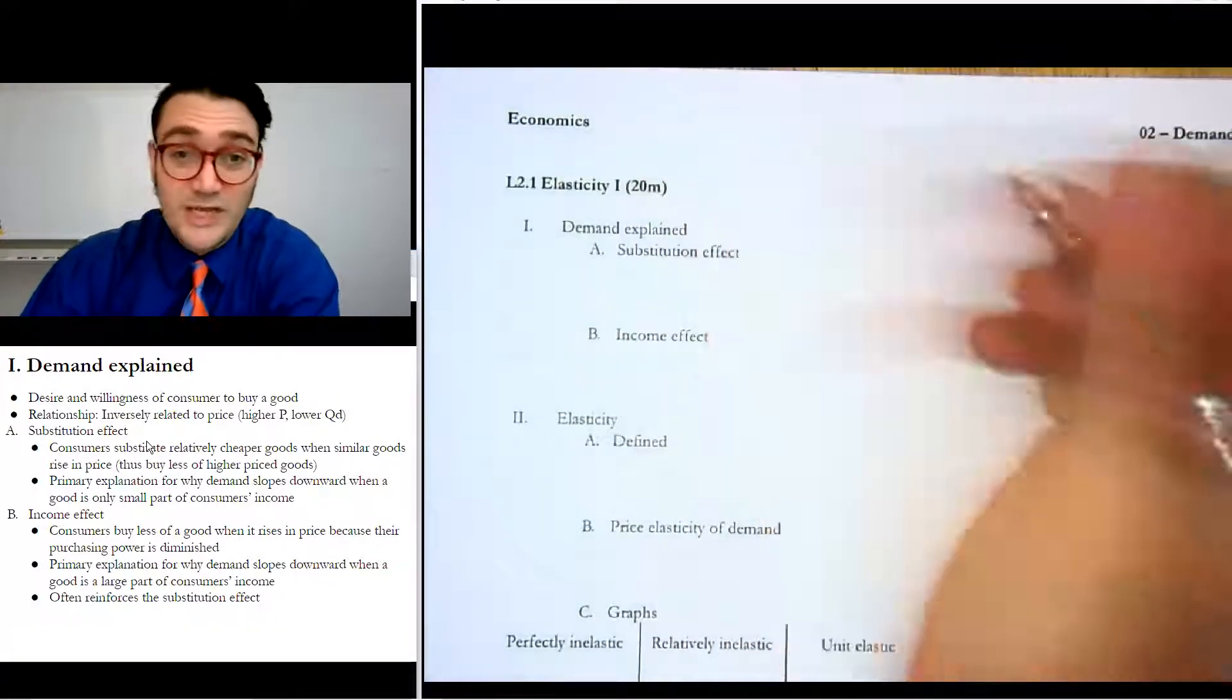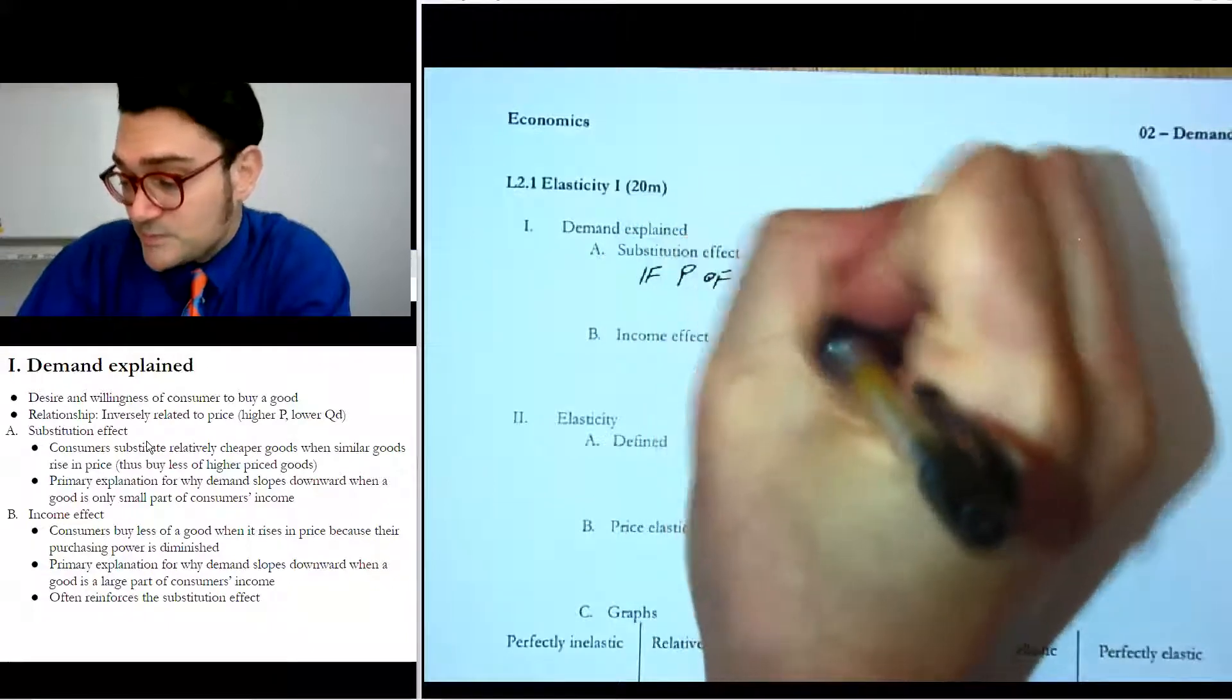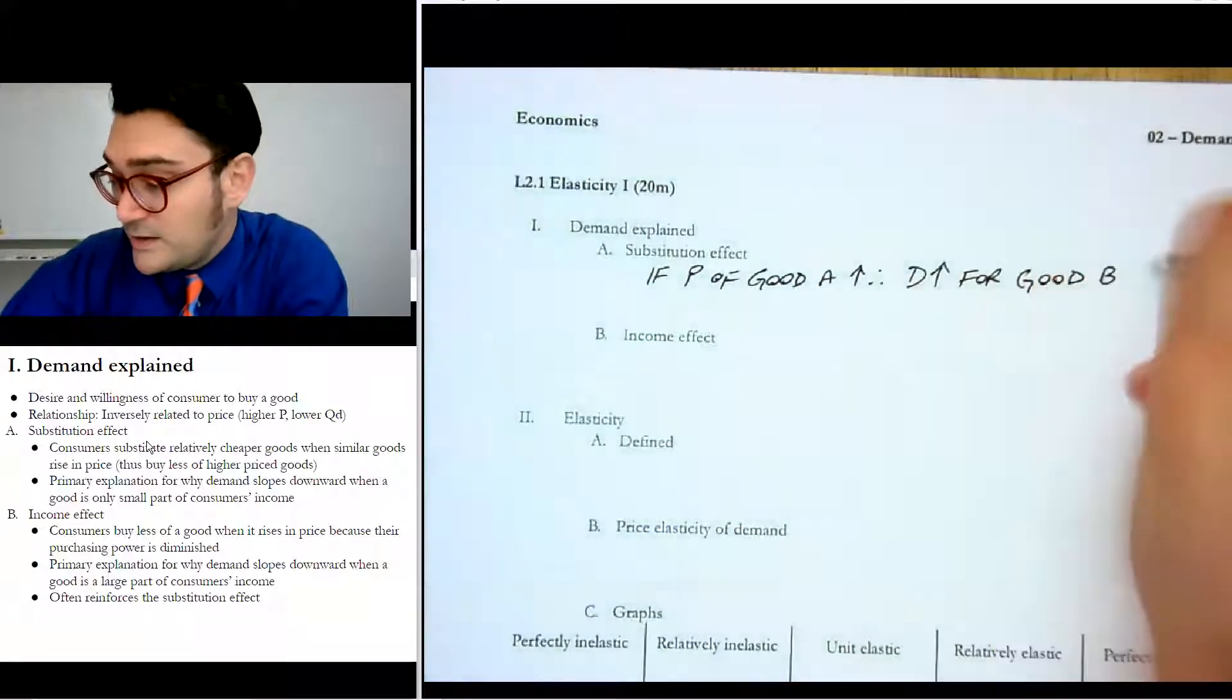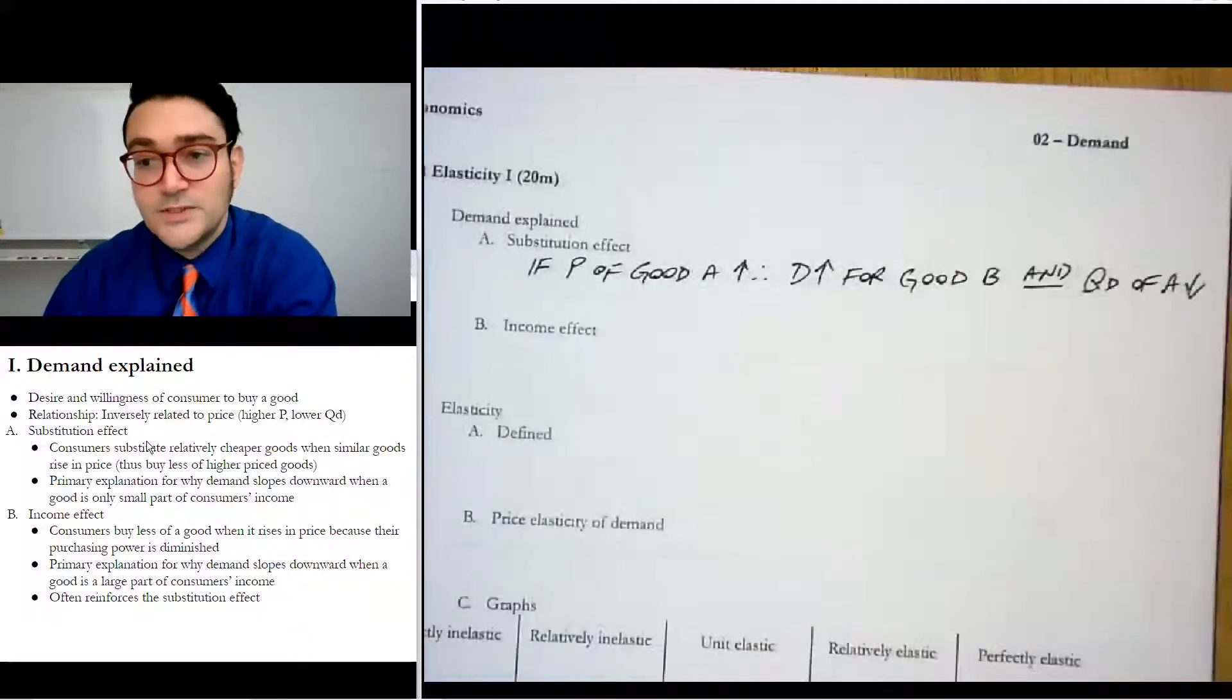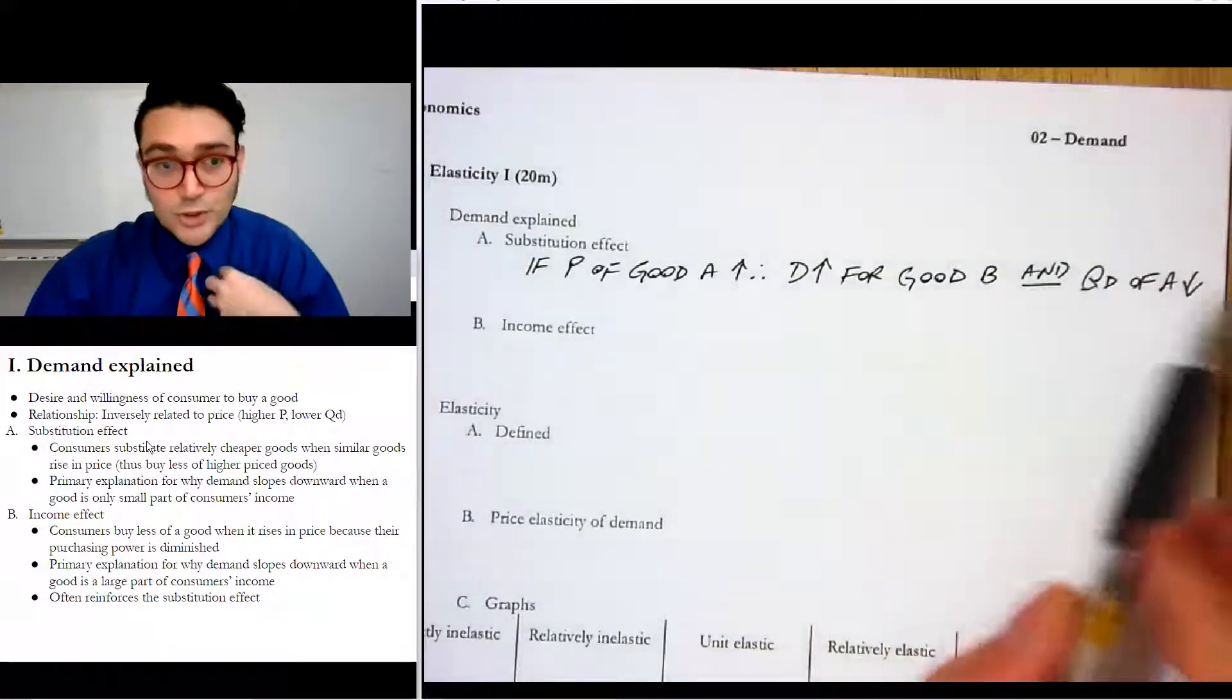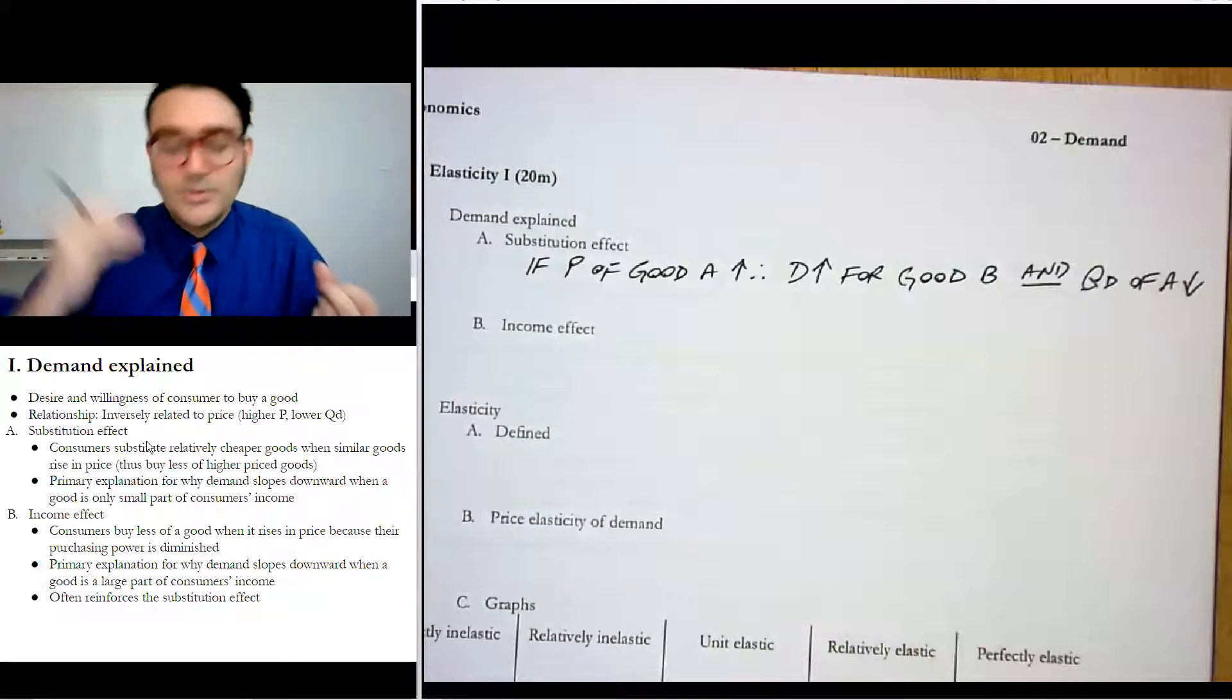And there are two simple reasons. One is called the substitution effect and the other is called the income effect. The substitution effect says that if the price of good A goes up, then we would expect the demand to increase for good B and the quantity demanded of A to go down. That's the idea of related goods, that one price can affect the demand for another. But in reality, what is also happening is that people are like, I don't need as much of good A anymore because now I'm buying more of good B. And so this is why when the price rises of the good, typically we see the quantity demanded fall.